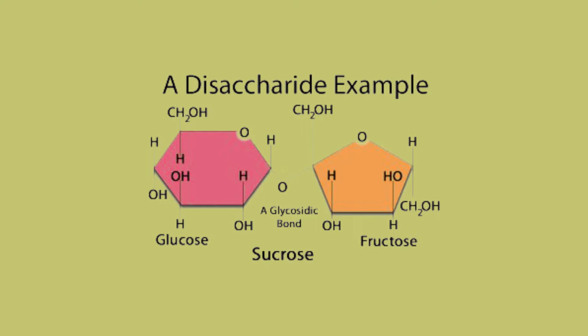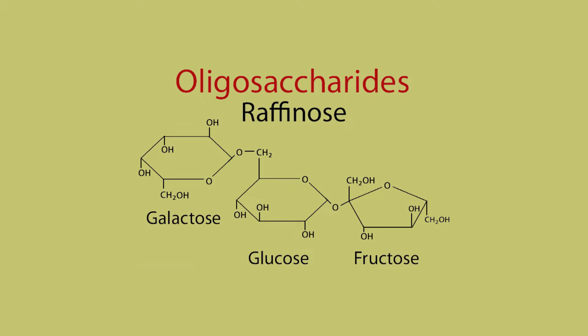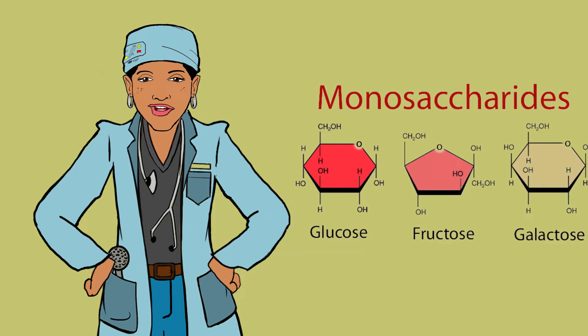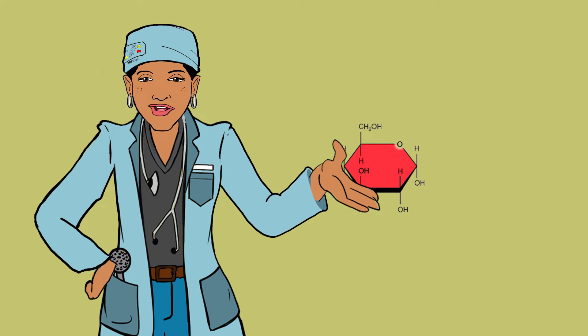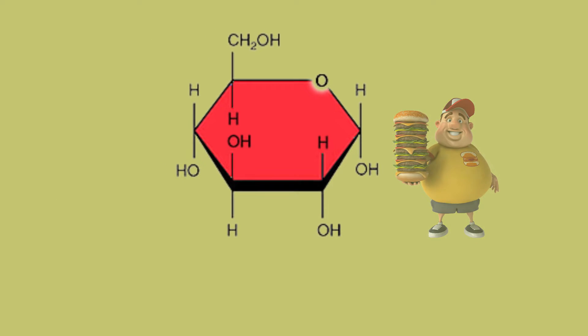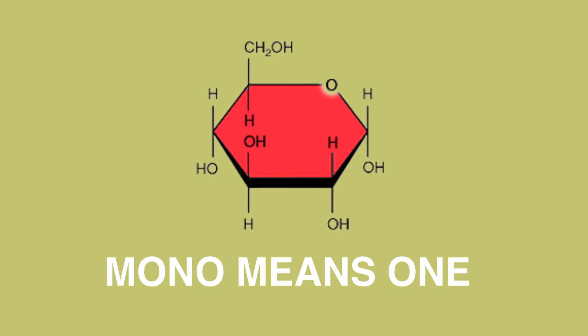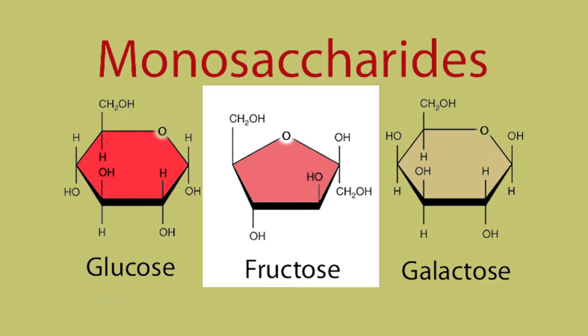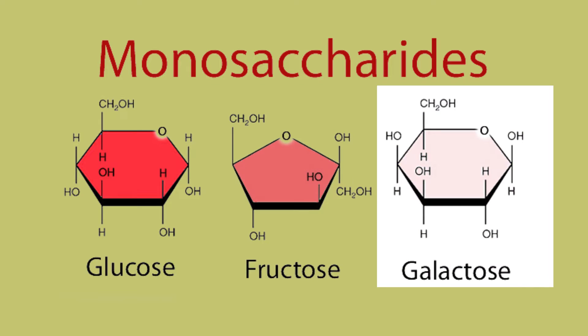The four classes are: disaccharides, oligosaccharides, polysaccharides, and monosaccharides. We will first talk about glucose, a monosaccharide, and learn if it is indeed the cause of obesity. Mono means one — so one carbohydrate unit, like glucose, fructose, or galactose.